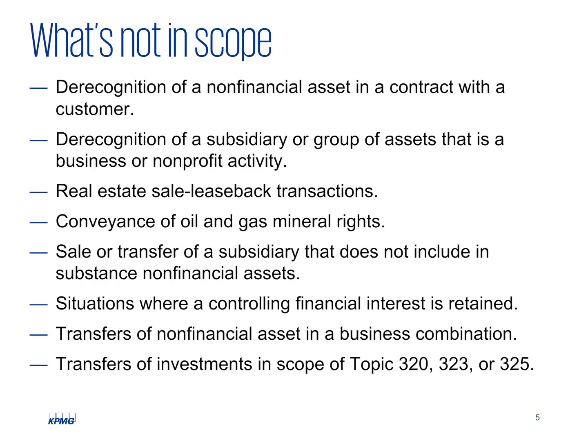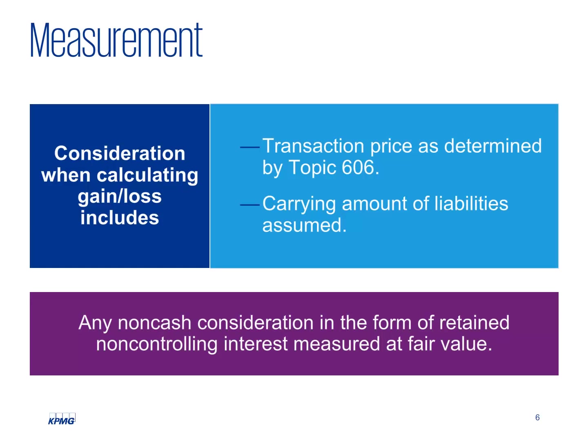The proposal also addresses the accounting for partial sales — those where you sell a non-financial asset and retain a non-controlling interest. When a non-financial asset or a group or subsidiary that includes in-substance non-financial assets is derecognized, the seller will measure the gain or loss by taking, first, the transaction price as determined by the new revenue standard, and second, the carrying amount of the liabilities assumed by the other party in the transaction, and subtracting the entire carrying amount of the non-financial asset.